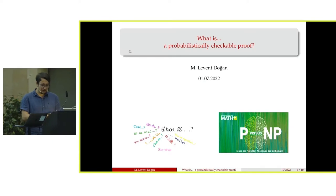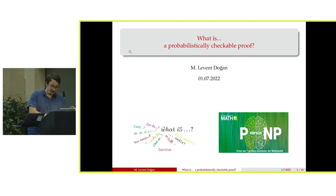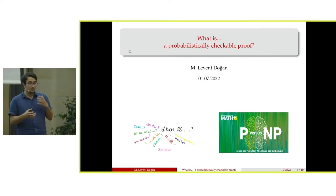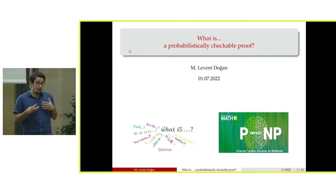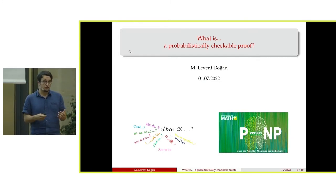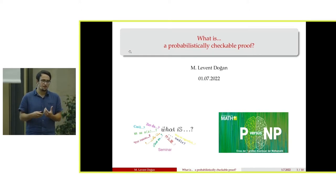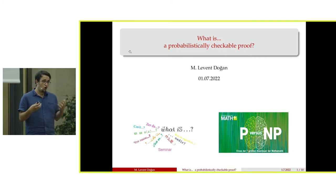P versus NP is one of the millennium problems of the century. If you solve it, you have basically a million dollars, if you are interested in that. I think I should just start by introducing what P and NP are. This is a hard topic because in our undergrads we don't usually learn about the formalization of algorithms — Turing machines or formal languages. So I will try to be very informal with the objects I introduce today.